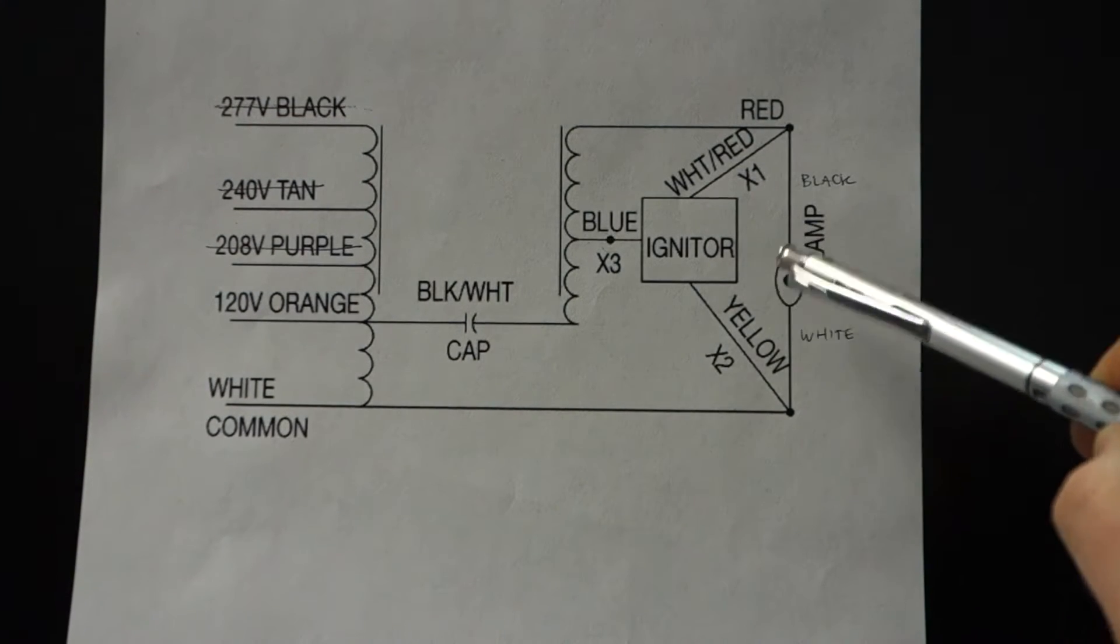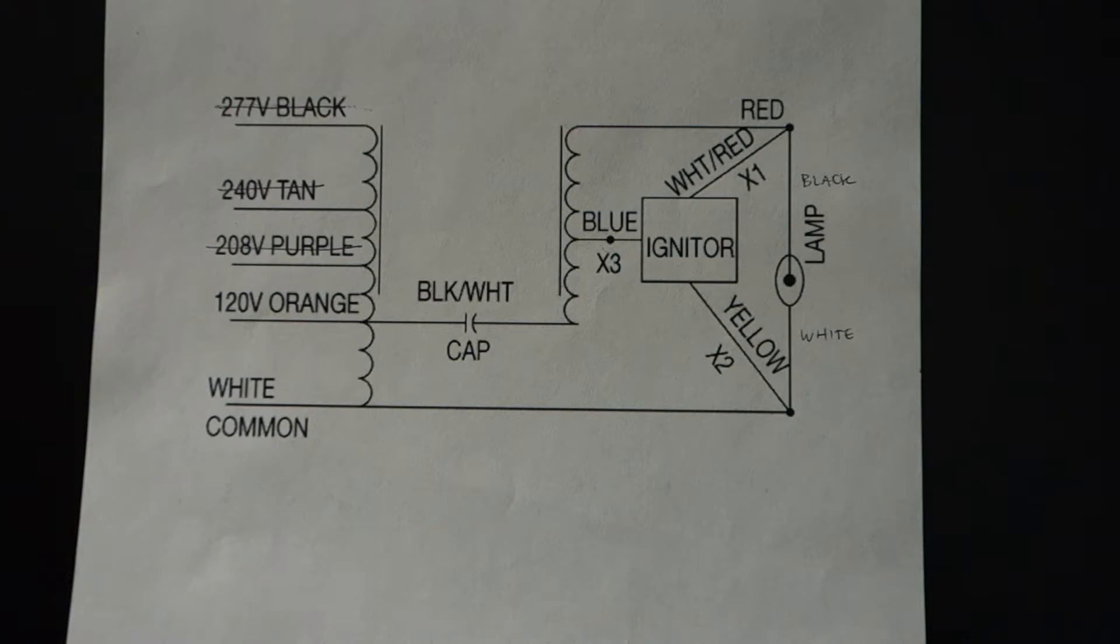From here, we're not going to be connecting the reflector directly. We're going to use an adapter so that we can choose in the future to run either Hydrofarm or Sunlight Supply. So off of that, we have three wires coming off: one black, one white, and then one green, which is your ground.